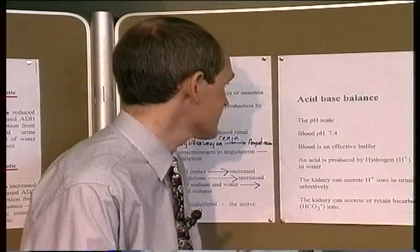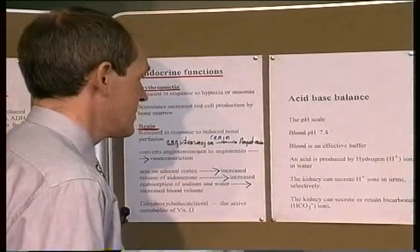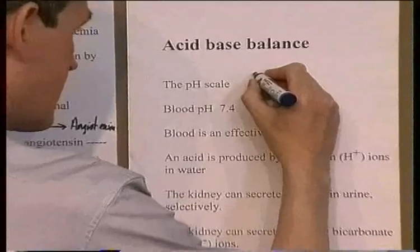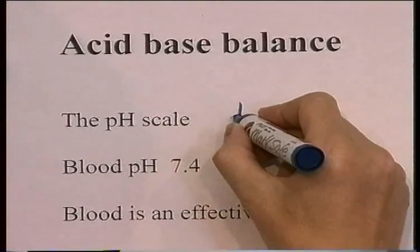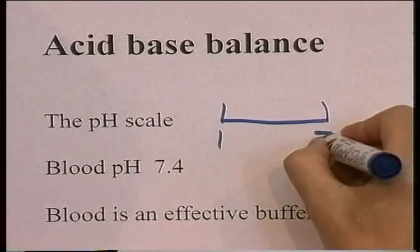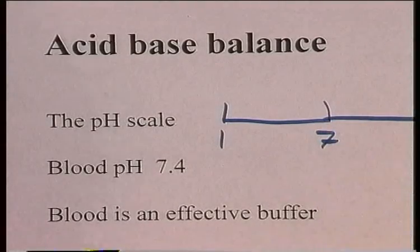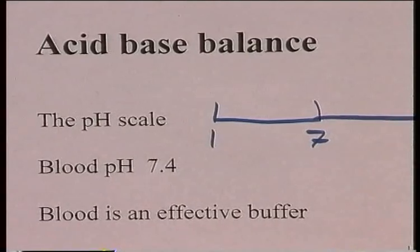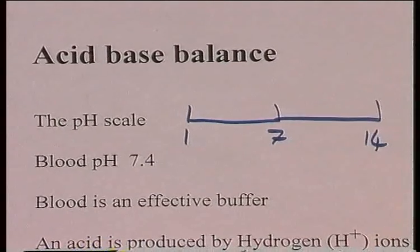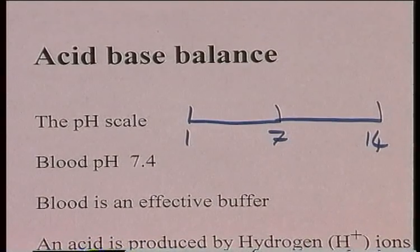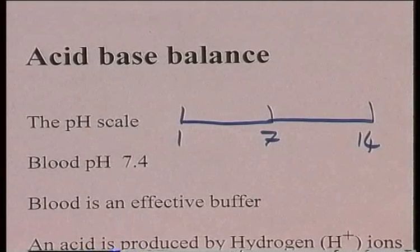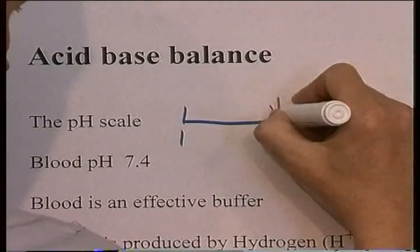So let's think about this. The pH scale goes from 1, which will be a very strong acid, to 7, which is neutral, to 14, which will be a very strong alkaline. And blood pH is around about 7.4. Blood is slightly alkaline.